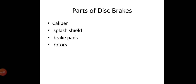Now, the components or parts of disc brakes. What are the components used in disc brakes? There are: caliper, splash shield, brake pad, and rotor. These are the main components of the disc brake.